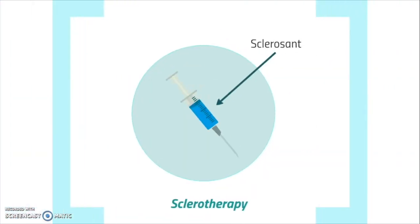The second treatment we will discuss is sclerotherapy, the most commonly used treatment. In this therapy, a substance is injected through the skin into the malformation. Different substances can be used for this therapy. The substance, called a sclerosant, causes scar tissue and will make the malformation shrink. This treatment, however, is quite painful and is, for this reason, generally performed under anesthesia. The therapy is most effective in macrocystic malformations — malformations with large cysts. However, there can be undesirable side effects and it is therefore wise to discuss this option thoroughly with the doctor.